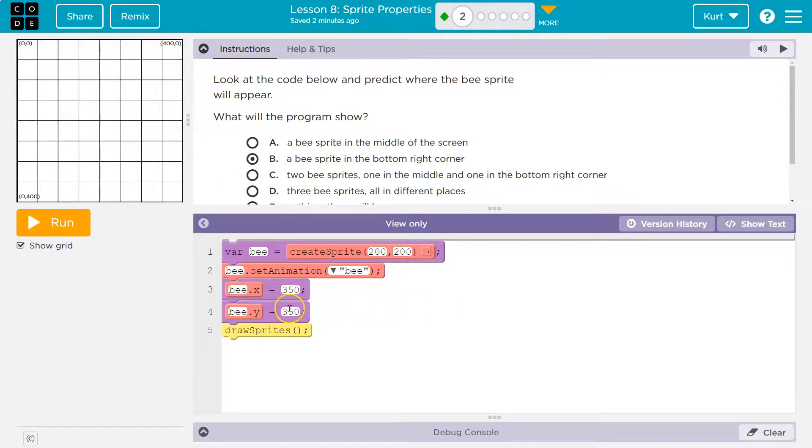All right. Oh wait. And the y value. Let's change that too. Change it to what? 350. And we push it down. Then what do we do? Well, then we draw it.